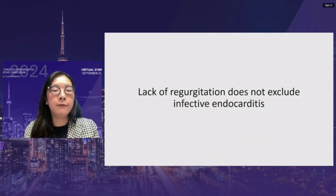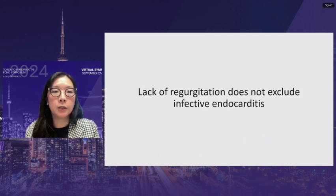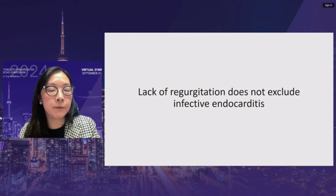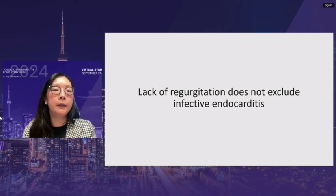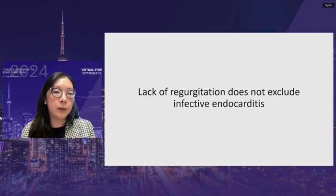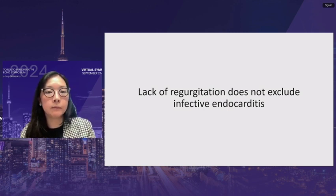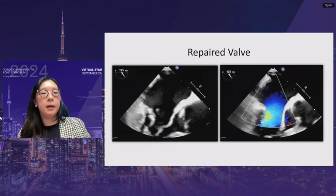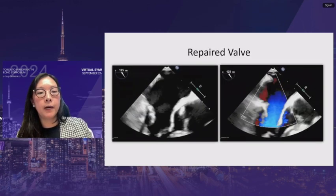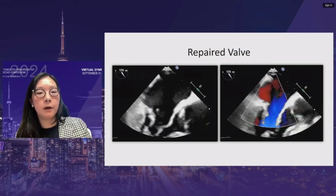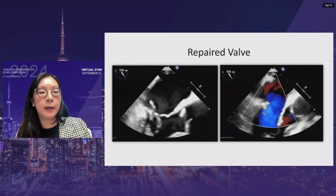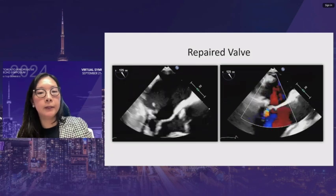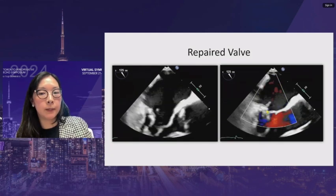An important point: some reports state that no vegetation seen and no significant regurgitation excludes infective endocarditis — that is not true. The lack of regurgitation does not exclude infective endocarditis; it means there is no valve destruction at that point. An example shows a repaired mitral valve with a large vegetation attached to the base of the posterior leaflet or annulus, and there is not a lot of regurgitation.